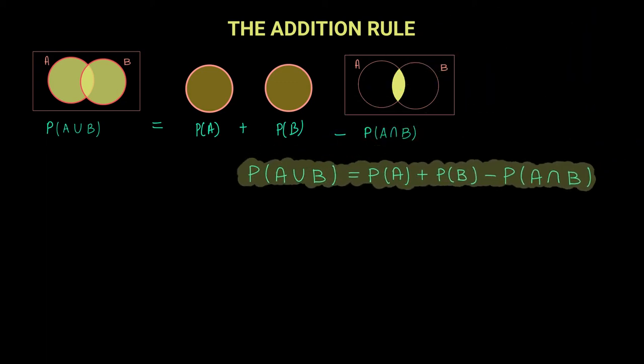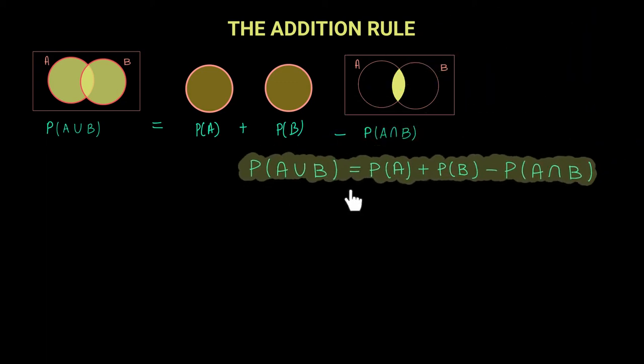The probability of A union B is equal to the probability of A plus the probability of B minus your intersection, because it is being counted twice. So to avoid repetition you need to minus it once.